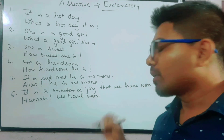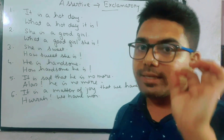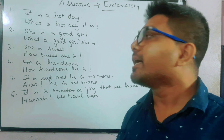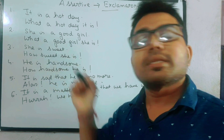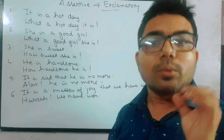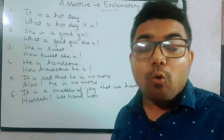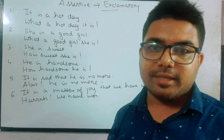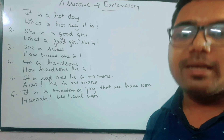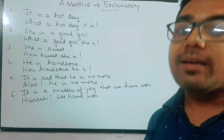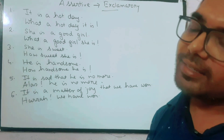So basically, to change an assertive sentence into an exclamatory sentence: we can start with 'What a', or start with 'How', or use an interjection like 'Alas', 'Hurrah', 'Bravo', 'Oh', etc. This much for today. If you have any doubt, write in the comment section. I promise to come back with other videos on grammar concepts. Bye bye, thank you!